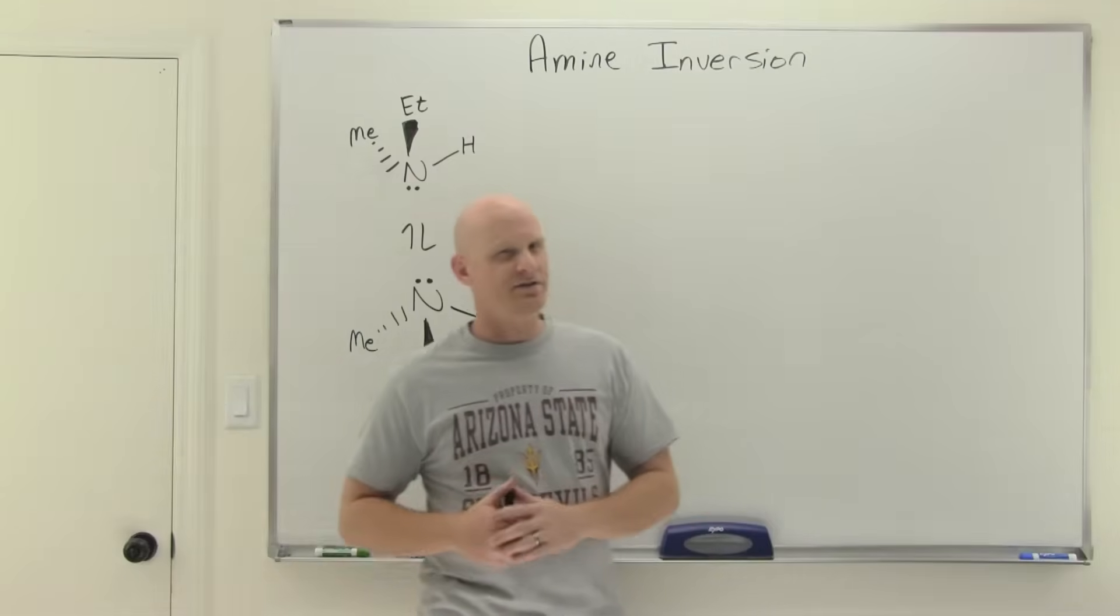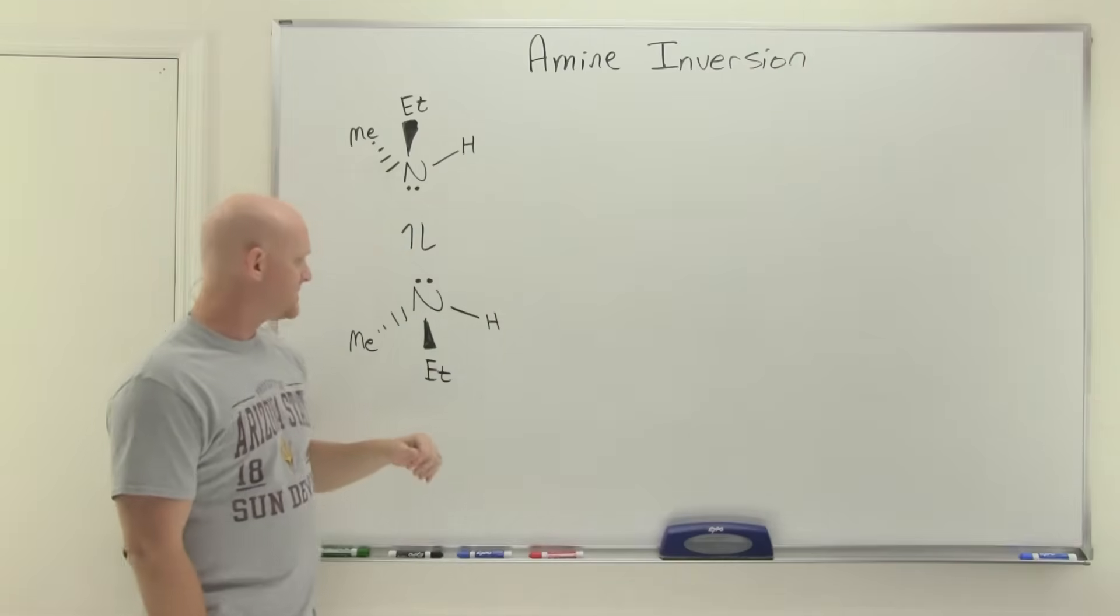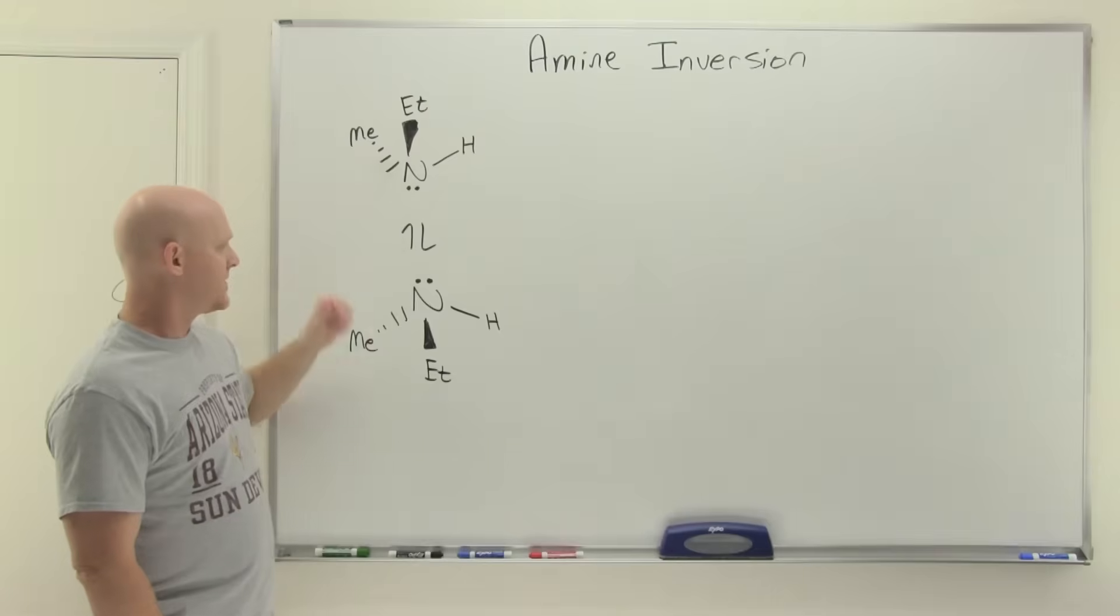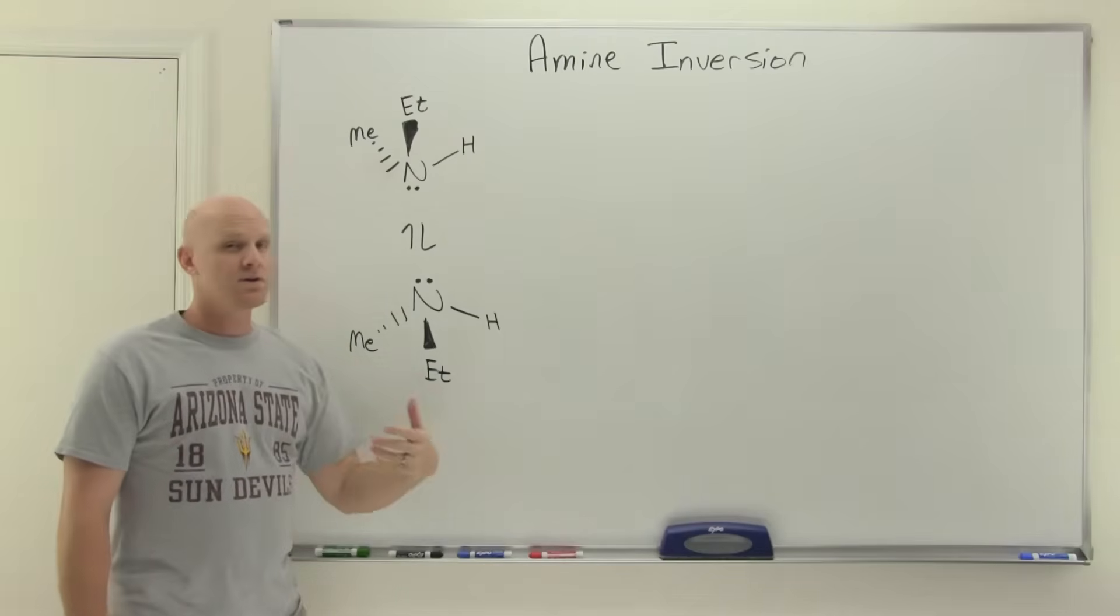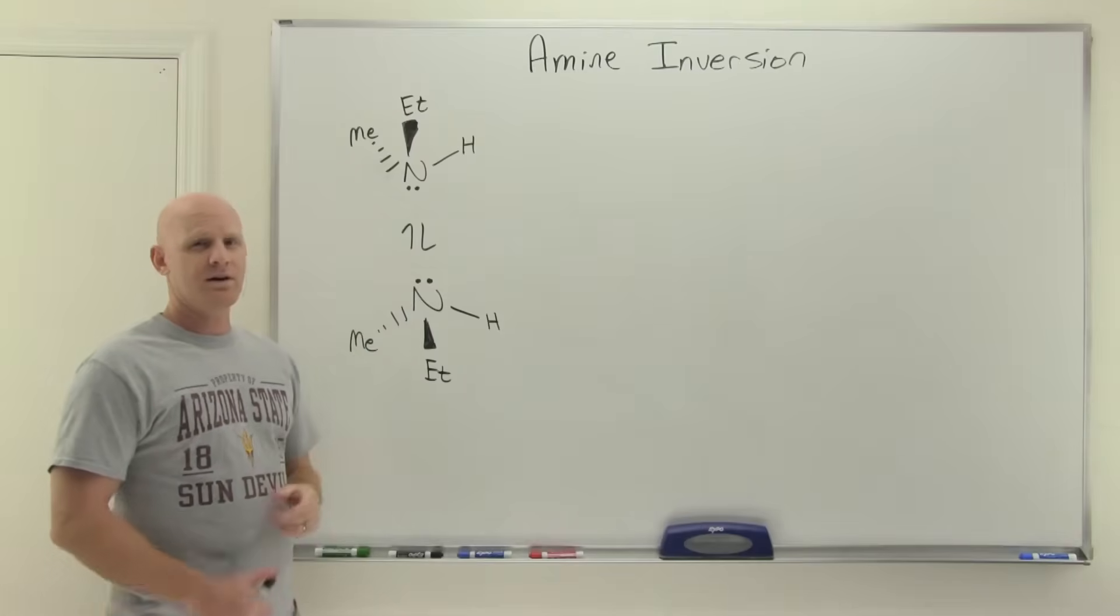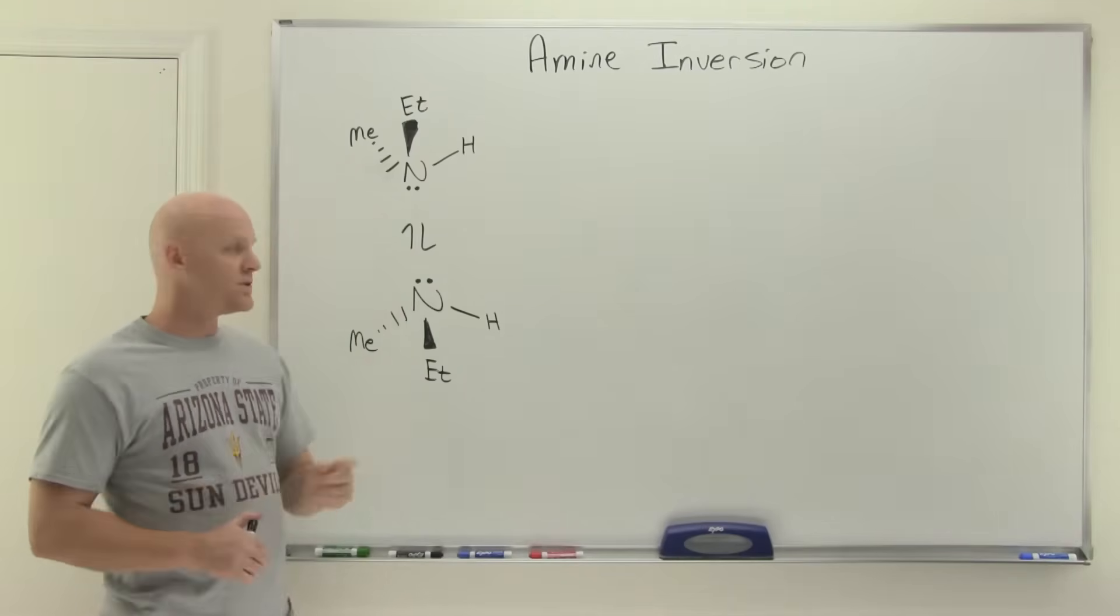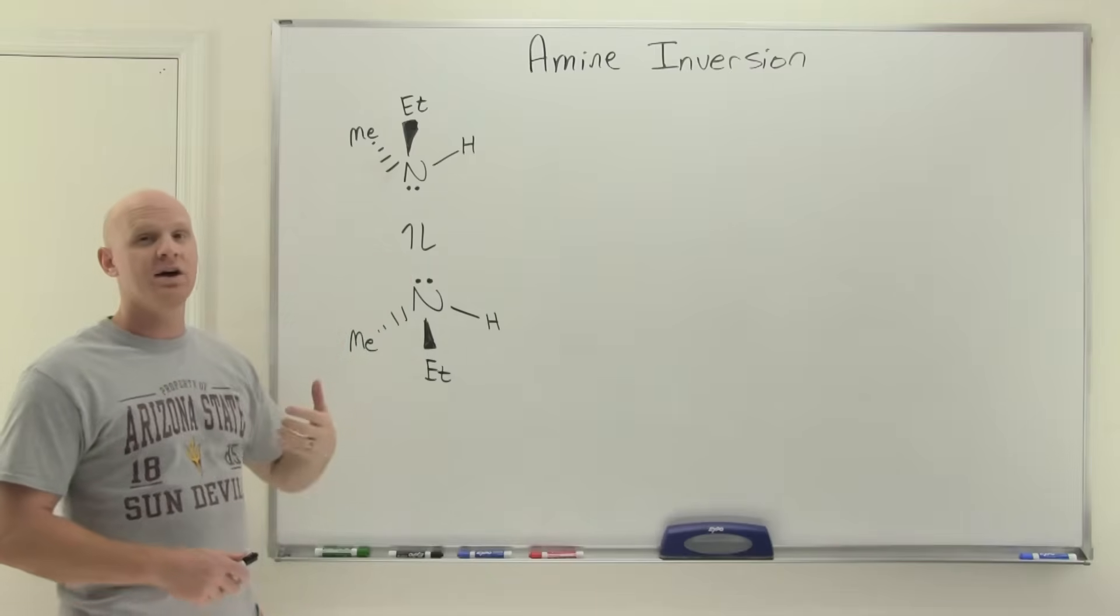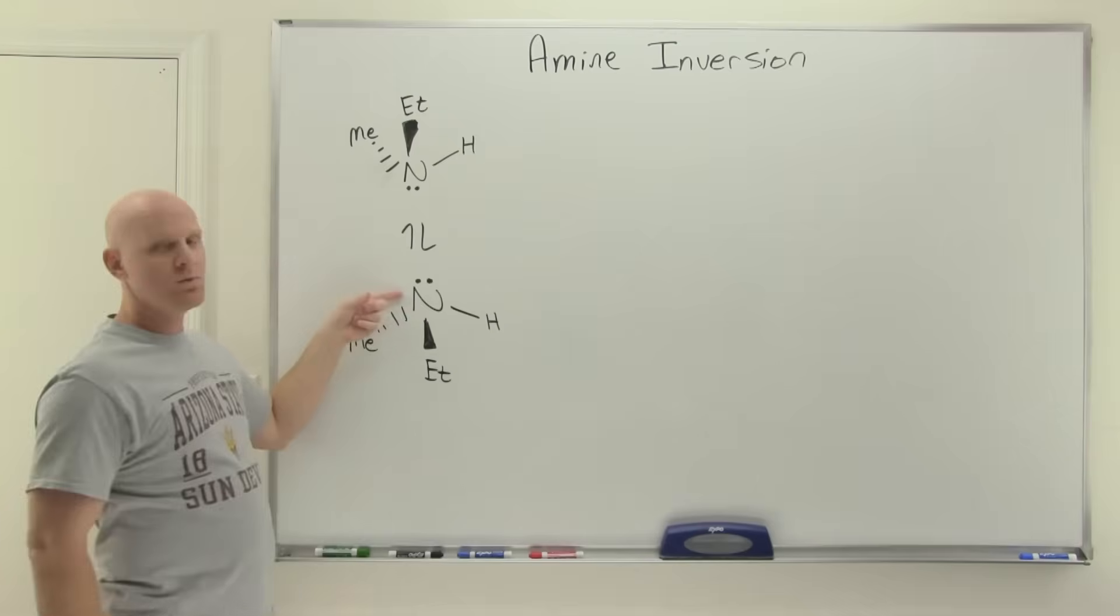Alright, so a couple oddities in this chapter, and the first one is what's called amine inversion. So if you look at an sp3 hybridized nitrogen here, typically nitrogen has three bonds and a lone pair. And it turns out we talked about a chiral center as being an atom with four different groups attached. Well, it turns out a lone pair of electrons can actually be one of those groups, just not typically with nitrogen.